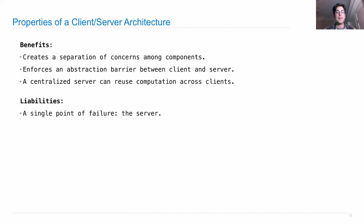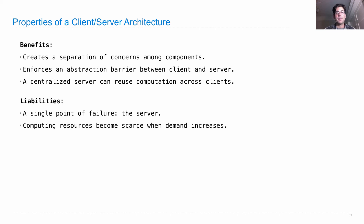But there are some liabilities. There is a single point of failure — the server. If the New York Times site goes down, there's no way to access that content. Computing resources also become scarce when demand increases, so it's the job of everyone running a service to make sure their resources can scale with the number of users trying to access it.